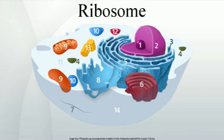In bacteria and archaea, more than one ribosome may move along a single mRNA chain at one time, each reading its sequence and producing a corresponding protein molecule. The ribosomes in the mitochondria of eukaryotic cells functionally resemble many features of those in bacteria, reflecting the likely evolutionary origin of mitochondria.